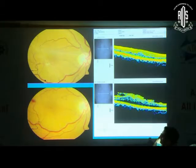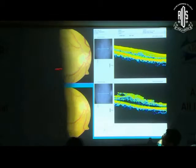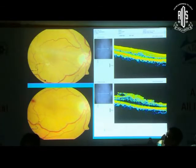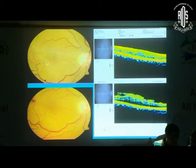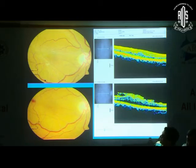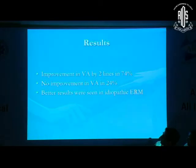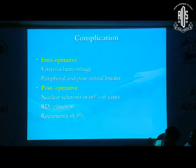These are the post-operative results. You can see a large epiretinal membrane before surgery, and after surgery the arcades have opened up. On OCT, you can see there is a decrease in retinal thickness. With this, I will conclude. Thank you.